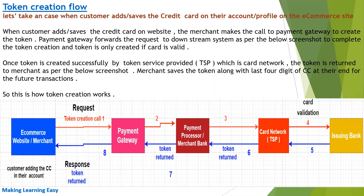Now let's see how the token creation flow works. To explain this flow, I have taken the example of a customer adding a credit card number on their e-commerce website profile. I have attached a flowchart to explain this. On the left side in the blue box you can see the e-commerce website or merchant, and the customer is adding the credit card details. When the customer submits the credit card details on the website, the merchant makes the token creation call to the payment gateway.